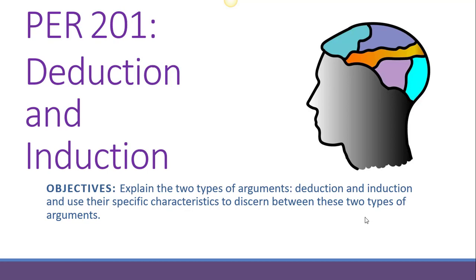This week is all about deduction and induction, or you may have heard these described as deductive and inductive reasoning. Our goals here are for you to be able to explain the two types of argument — deductive and inductive — and how to recognize their characteristics so that when you are presented with an argument, you can figure out if it's deduction or induction.